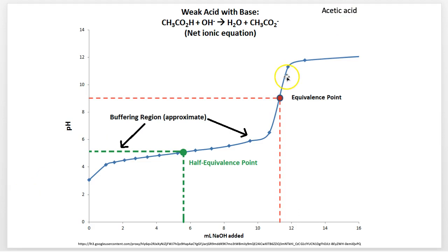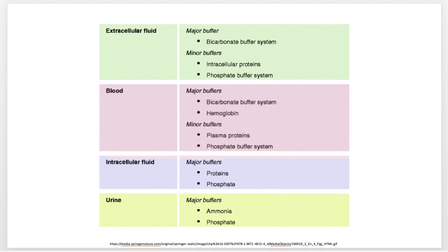In biological systems we see tons of buffering systems — bicarbonate being one of the most common ones, the phosphate buffer system being another minor one relatively, and protein buffering systems, which are also important though people don't talk about them that much.